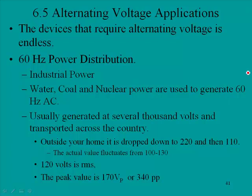At the college here, we have an emphasis in industrial power in our electrical engineering technology degree, as students are inclined towards that subject area. Water, coal, and nuclear power are used to generate 60 hertz AC. You usually generate it at several thousand volts and transport it across the country. Outside your home, it is dropped down to 220 and then to about 110.